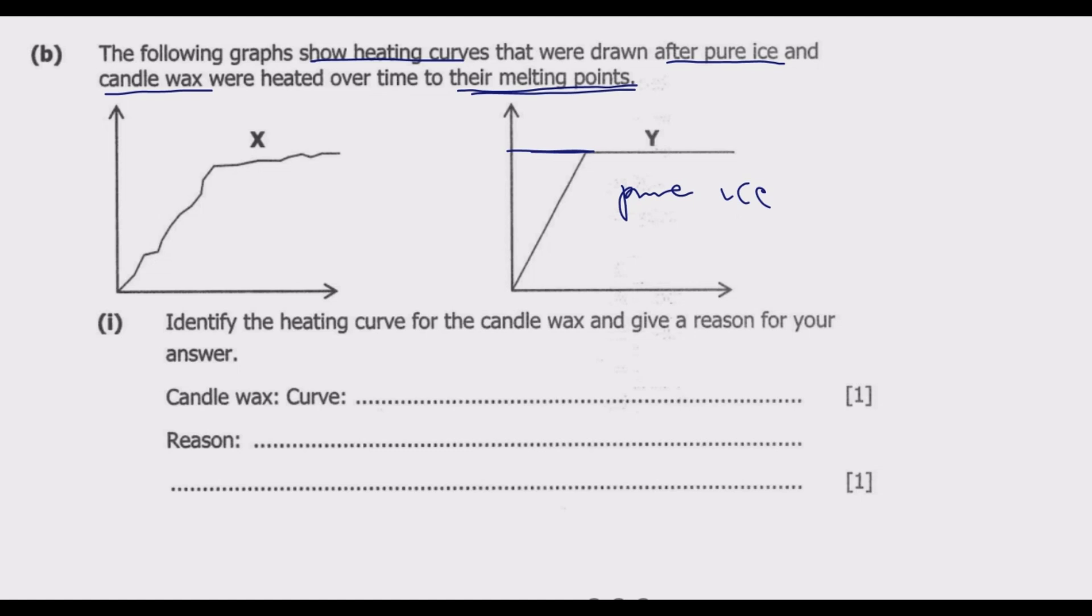Candle wax is made up of a mixture of various hydrocarbons with different numbers of carbons and lipids. Because it is a mixture, it will have an irregular melting point. You notice that this curve is irregular. So candle wax is curve X.